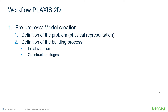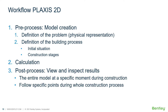The workflow of Plexus 2D consists of two parts. The preprocessing, where you're actually going to create the model — here we define the actual physical representation of the problem. The second stage is the definition of the building process: what's the initial situation, and then we can simulate the different construction stages. When that is done, we can start the calculation. After the calculation is finished, we can start the post-processing — we can view and inspect the results.